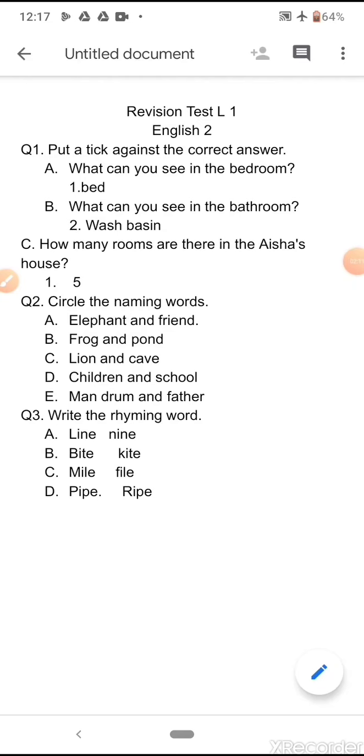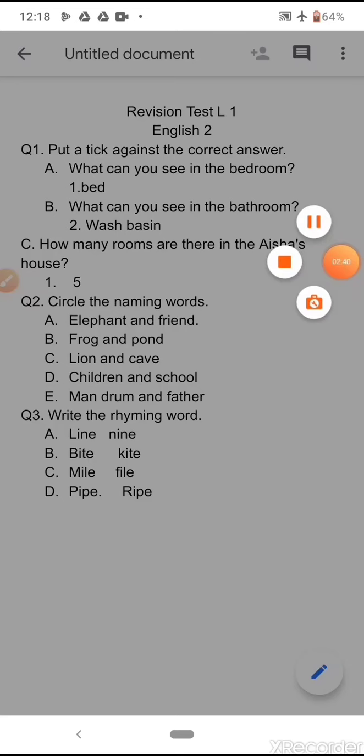Now the last question: write the rhyming word. In this question, you are supposed to write one rhyming word. The answer is like this: the first one is nine, second one is kite, third one is file, and the last one is ripe. Students, these are the answers of your revision test. I hope you all have matched them.